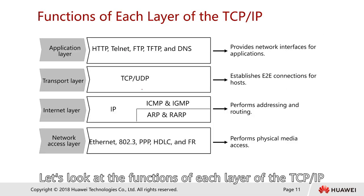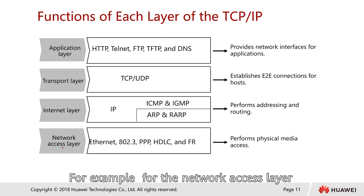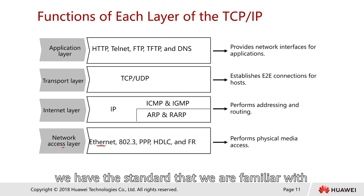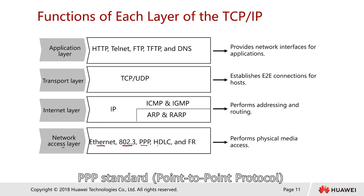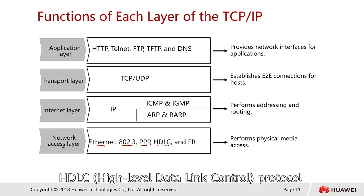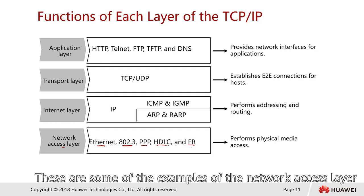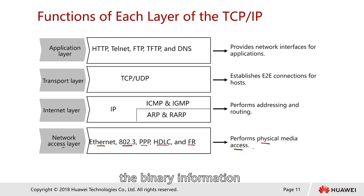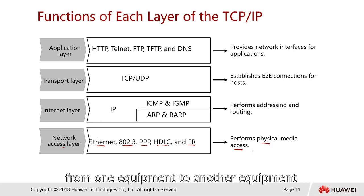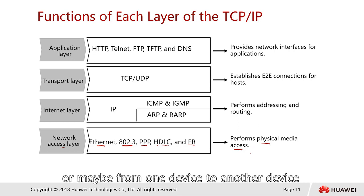Let's look at the functionality of each TCP/IP layer. For the network access layer, common standards include Ethernet, 802.3 standards, PPP (point-to-point protocol), HDLC (high data link control protocol), and frame relay. The main function of this layer is to perform physical media access and transmit binary information — bits — from one device to another. This is about physical stuff.